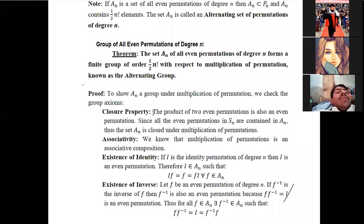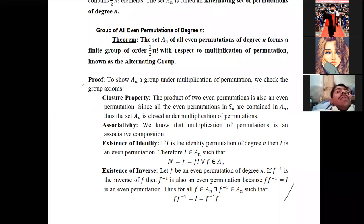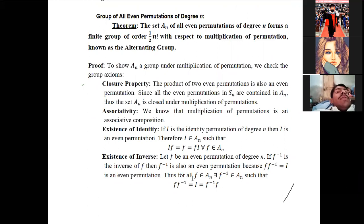To show that An is a group under multiplication, we check the group axioms. Closure: if you multiply two even permutations, you again get an even permutation in Sn, so closure holds. Associativity: multiplication of permutations is associative. Identity: the identity permutation is an even permutation, so it belongs to An. Inverse: according to the above result, if alpha is an even permutation, its inverse is also even — so inverses exist in An. All group properties are satisfied.